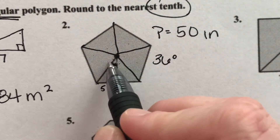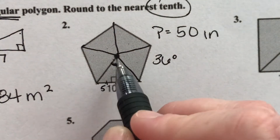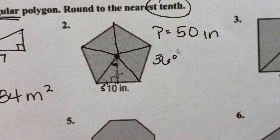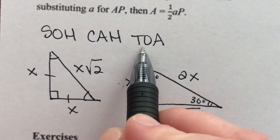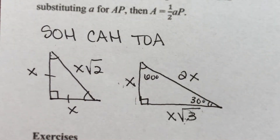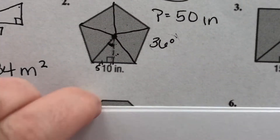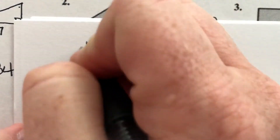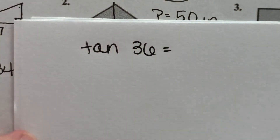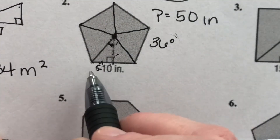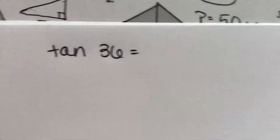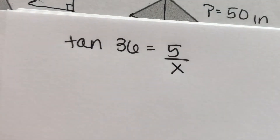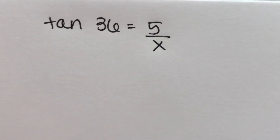From the 36-degree angle, I have the opposite side and need the adjacent side — that's opposite over adjacent, which is tangent. Tangent of 36 equals opposite over adjacent: 5 over x. So I have enough to solve for the length of the apothem. Once I have that, it's easy to find the area.